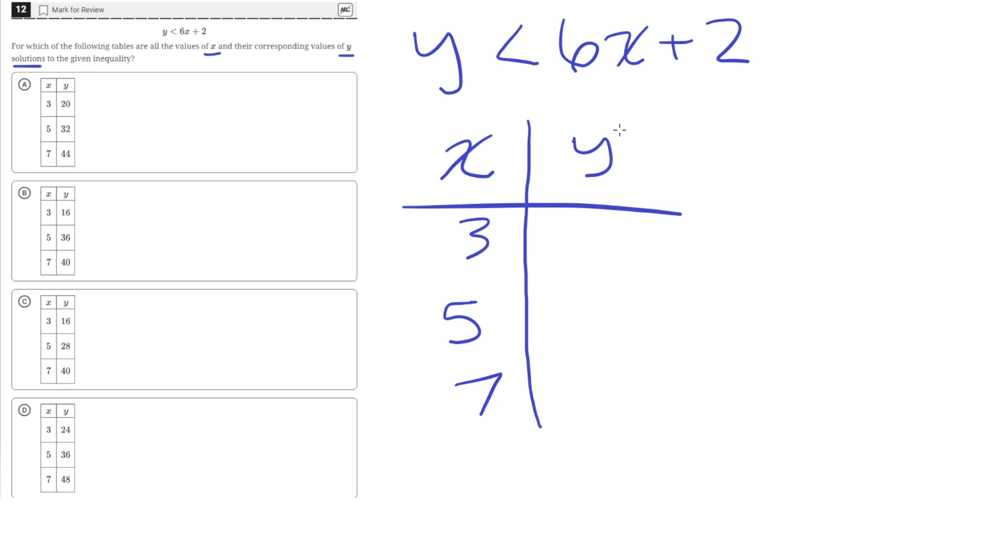So when you plug in a value of 3 for x, we get 6 times 3 is 18, plus 2, which is 20. 6 times 5 is 30, plus 2 is 32. 6 times 7 is 42, plus 2 is 44.